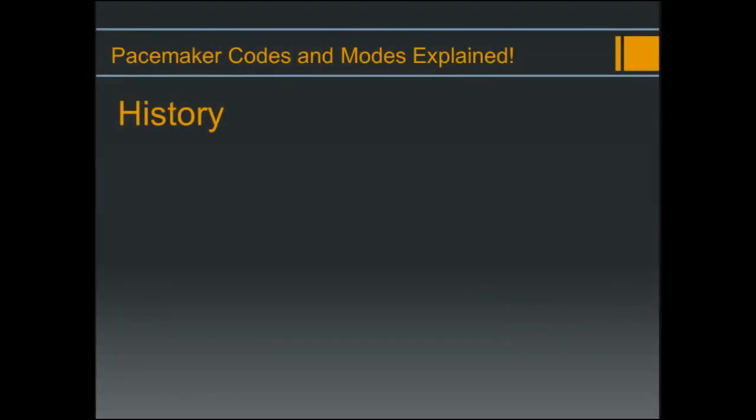In order to explain pacemaker codes and modes and where they came from, we need to take a little look at the history of pacemakers. In the early days, pacemakers really weren't all that complex — you would set the rate, implant the device, and were unable to change that rate. As pacemakers became more complex, capable of being reprogrammed and pacing and sensing in multiple chambers, a problem arose: different companies and physicians were using different terms to explain how that pacemaker was programmed to function. In 1974, the Intersociety Commission for Heart Disease Resources recommended a three-letter code to help simplify and standardize terminology.